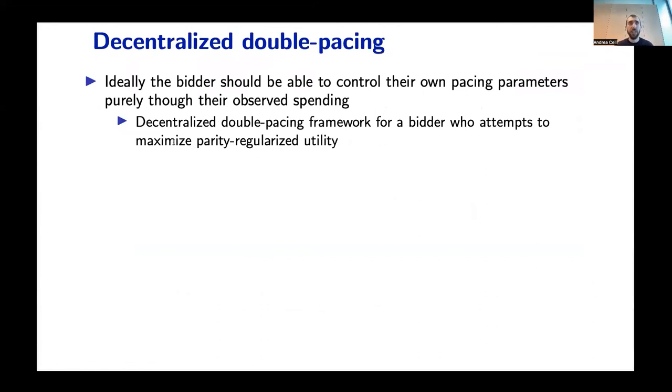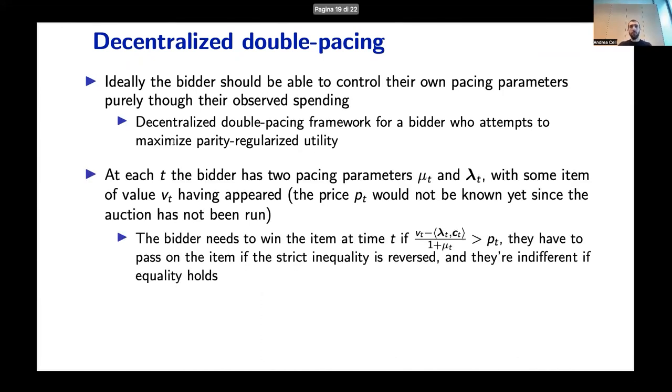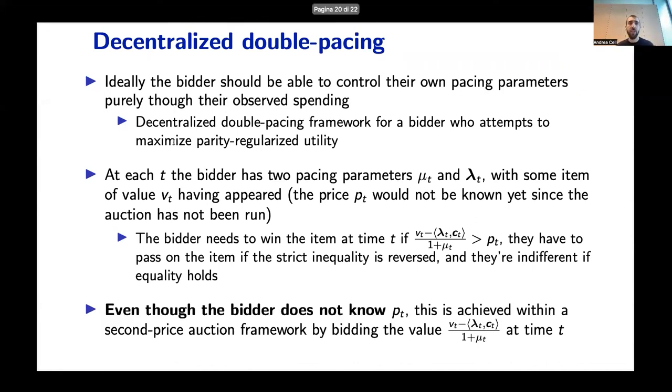Ideally, the bidder should be able to control their own pacing parameters only by using the observed spending as information. In particular, at each time t, the bidder has two pacing parameters mu t and lambda t and observes some value vt. But in practice, the price pt is not known until the bid has been placed. So this could be a problem, but we show that even though the bidder does not know pt, the optimal thing that the bidder can do is placing a bid equal to this value here, which has an additive correction for keeping distributional preferences into account, and then we apply the usual one plus mu t bid shading factor.